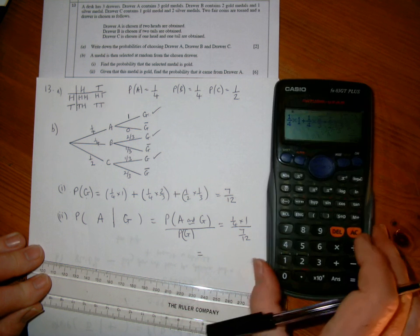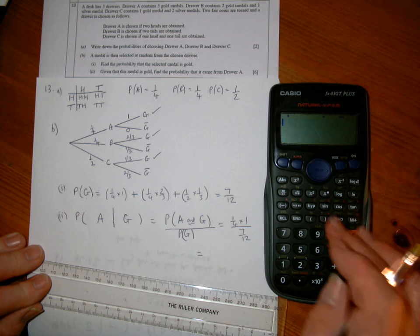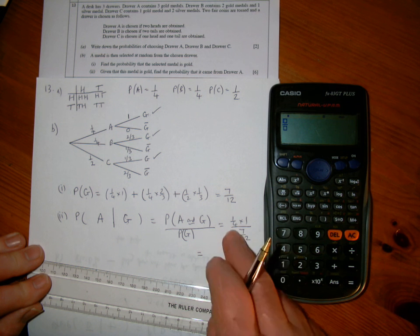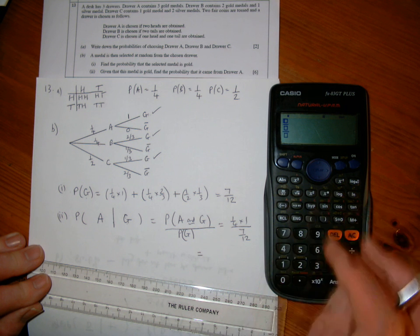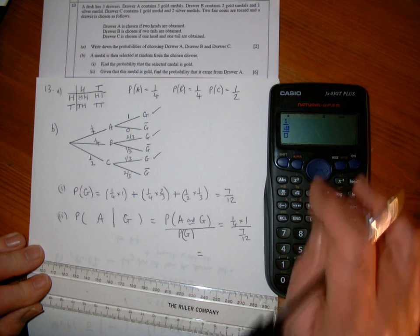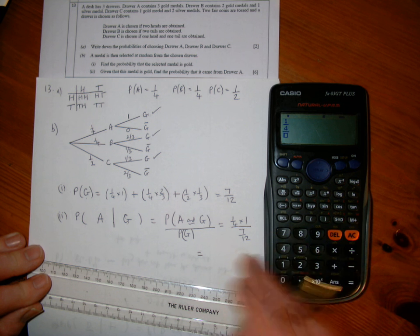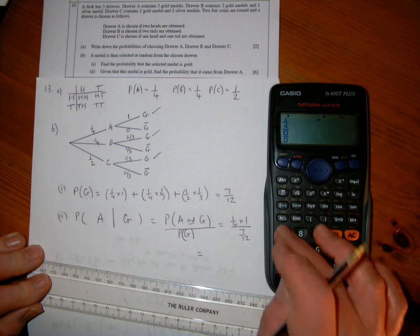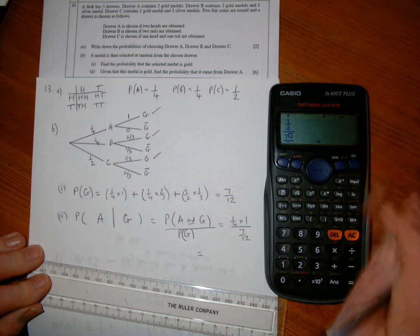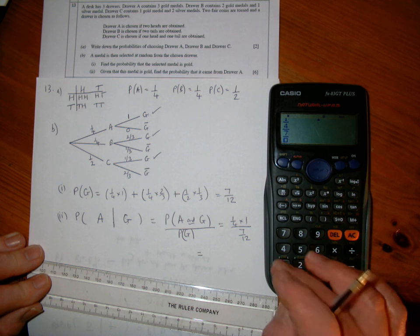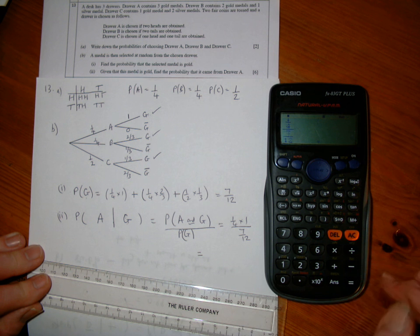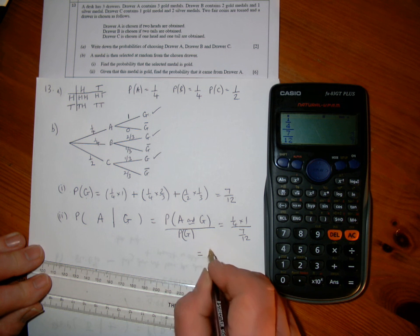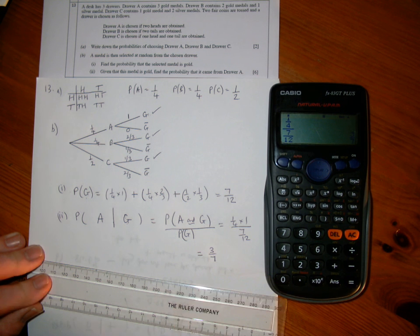I'll take down the calculator. I've got the top line: a quarter times one, which is a quarter, so it's one over four on the top line. Bottom line I've got seven over twelve, and that gives me an answer of three-sevenths.